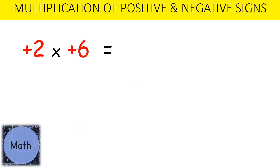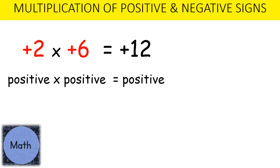In this example we have positive 2 multiplied by positive 6. The signs are the same, so therefore the answer will be positive, and 2 multiplied by 6 gives us 12. Therefore a positive multiplied by a positive equals a positive.